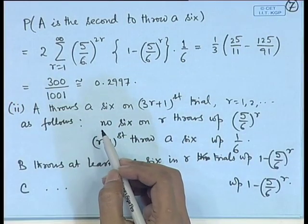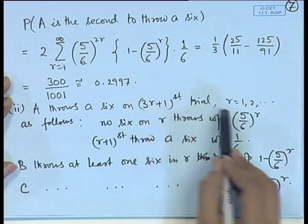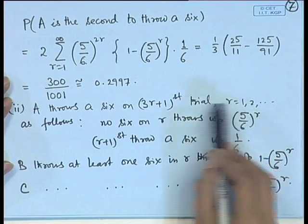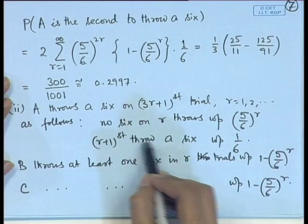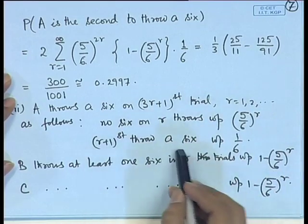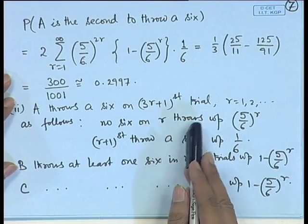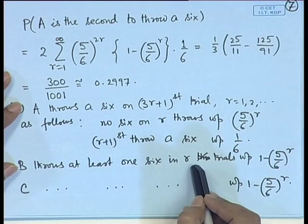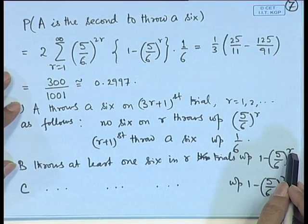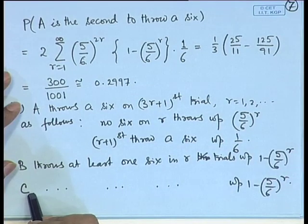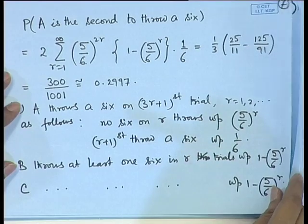For A to be last to throw a 6: A again gets a 6 on trial 3R+1 for R ≥ 1 — no 6 in R throws with probability (5/6)^R, and a 6 on the next throw with probability 1/6. Now both B and C must each get at least one 6 in their R trials, each with probability 1 − (5/6)^R.